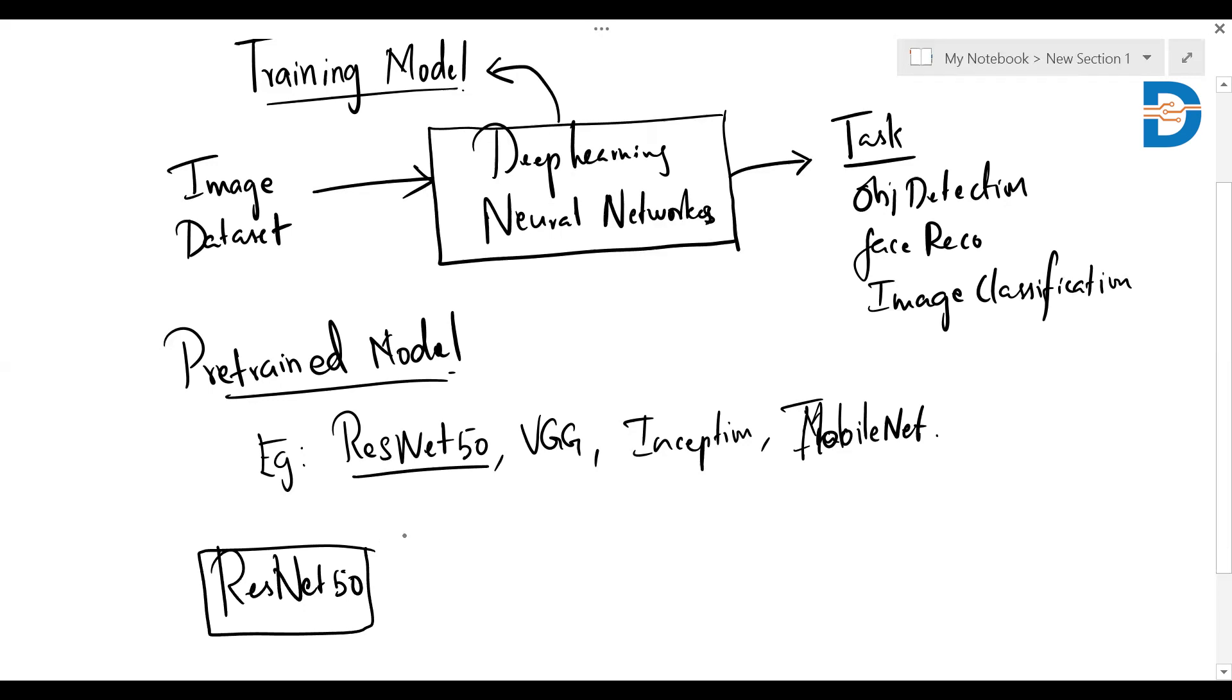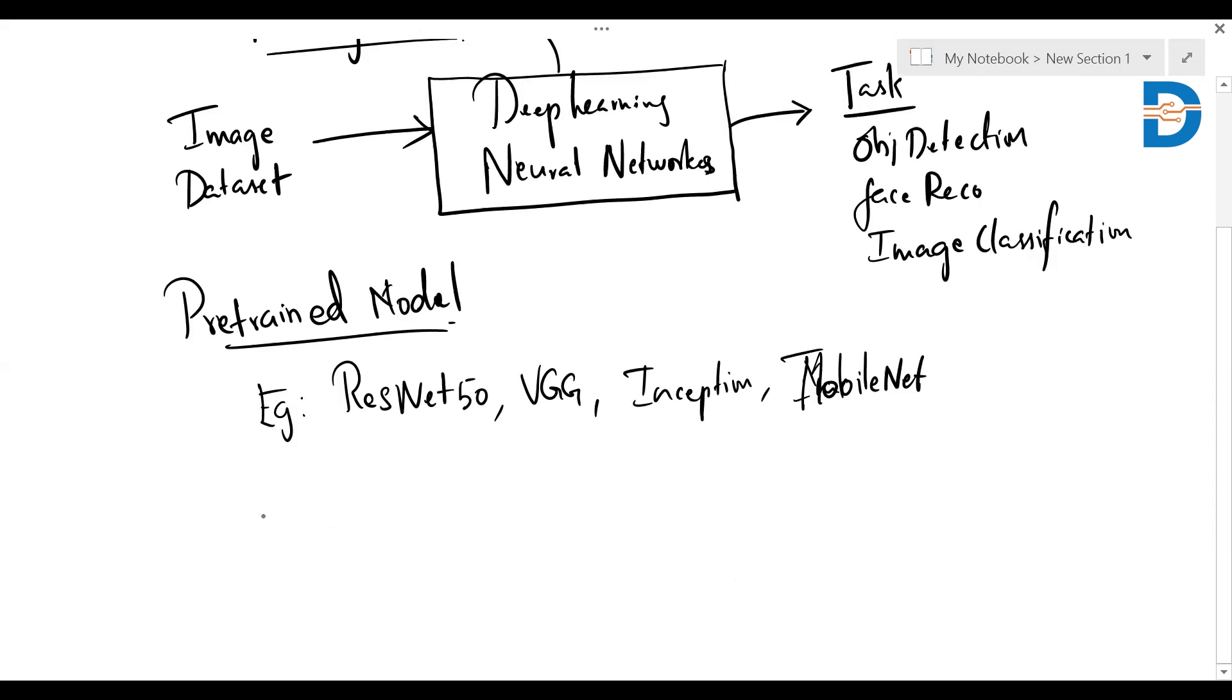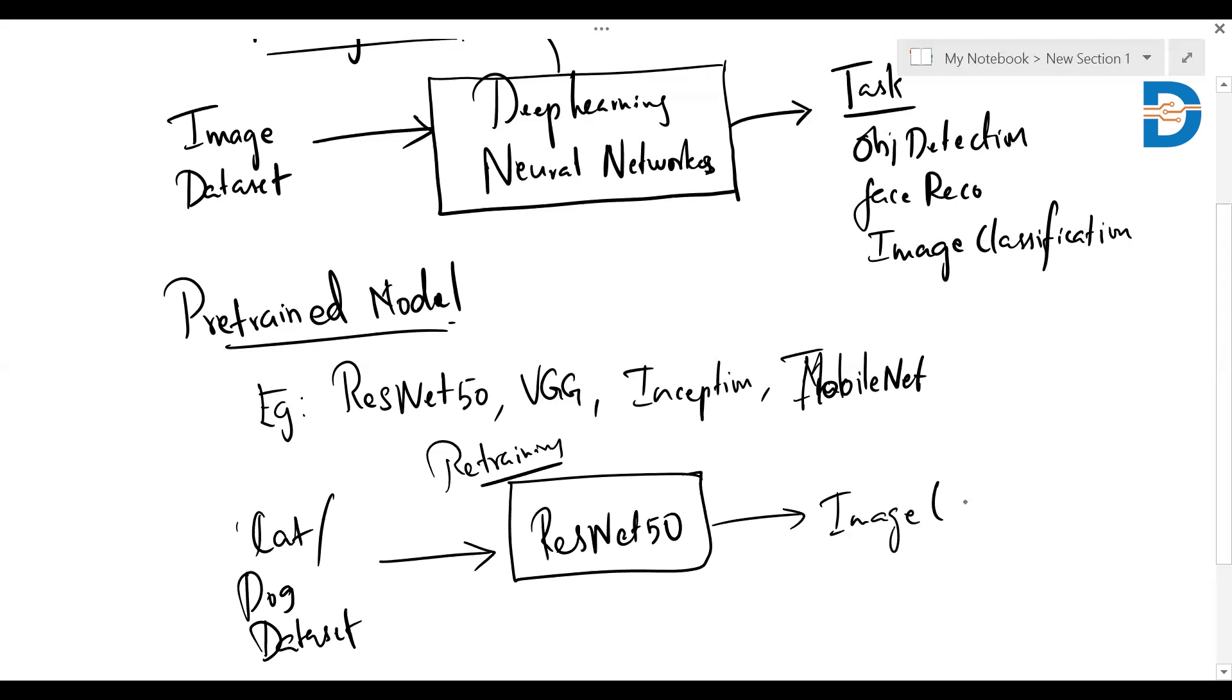That is what is called transfer learning. I'll give a certain cat/dog dataset and I'll be retraining this ResNet50 which is a pre-trained model. I'll be getting certain image classification. The point of retraining or fine-tuning is to get the model to work better for my particular scenario. This is what we call transfer learning.